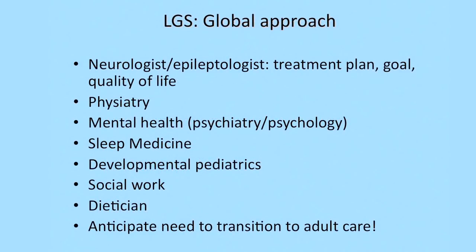Because of that, it is very important to have a team approach, with the neurologist or epileptologist as the leader who has the treatment plan and identifies features impacting quality of life. You might want to recruit mental health providers including psychiatry and psychology, physiatry, sleep medicine, developmental pediatrics, social work, and a dietician, who is frequently essential.